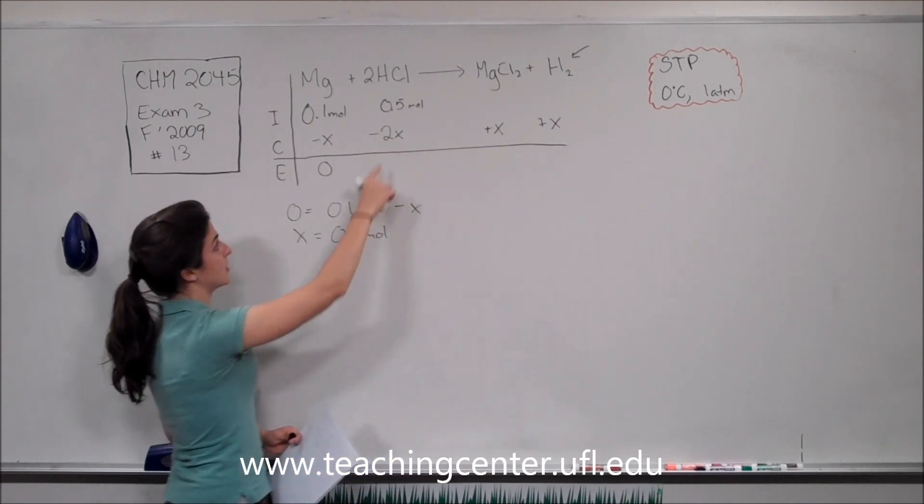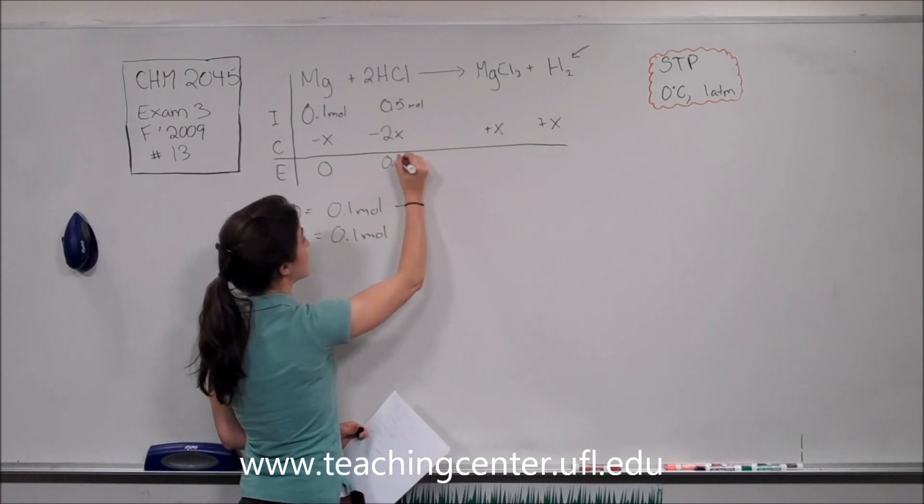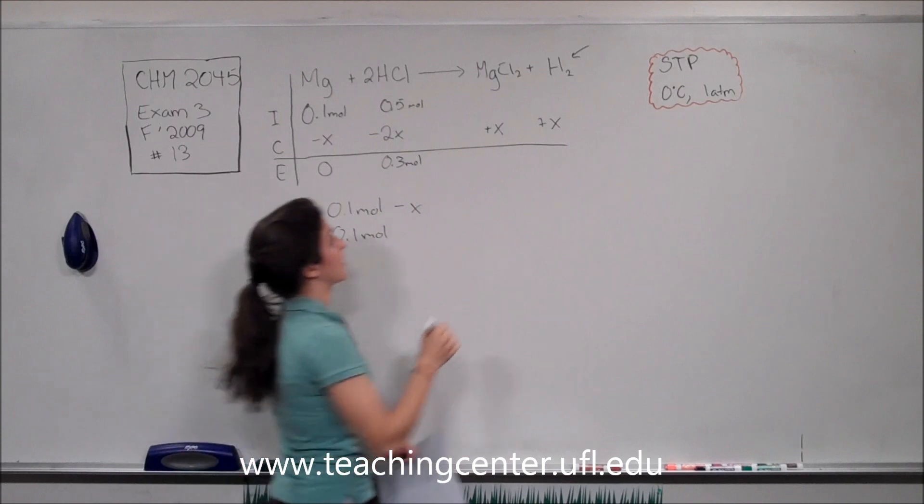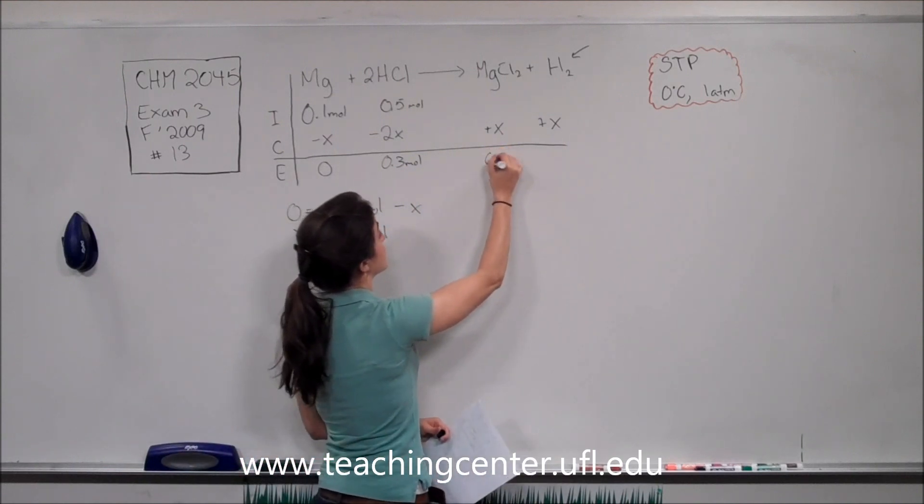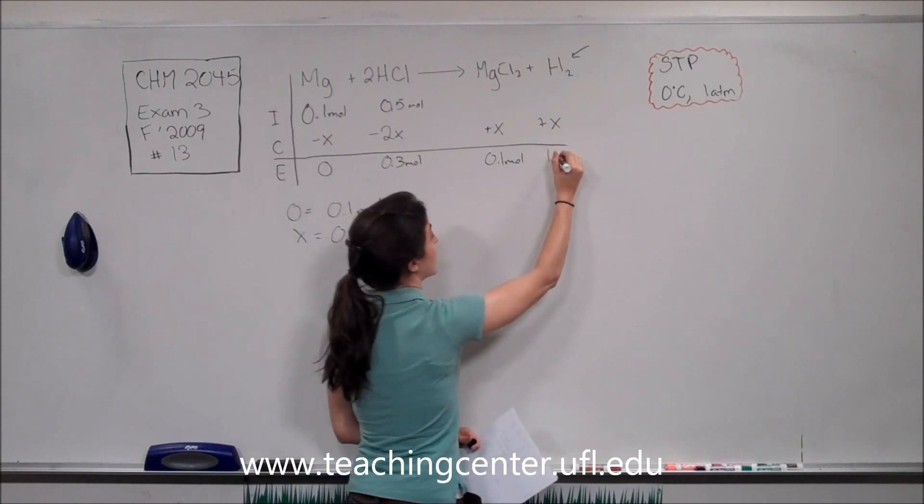So putting that in for each X here, we have 0.5 minus 0.2 moles. So this is going to be 0.3 moles of HCl in the end. This is going to be 0.1 moles of magnesium chloride, and 0.1 moles of hydrogen gas.